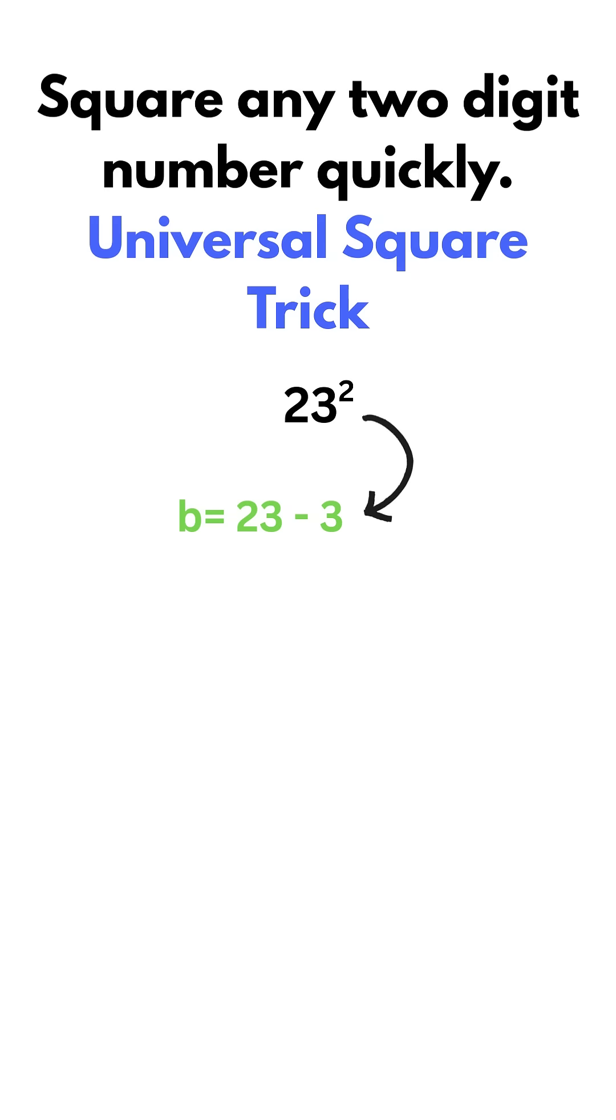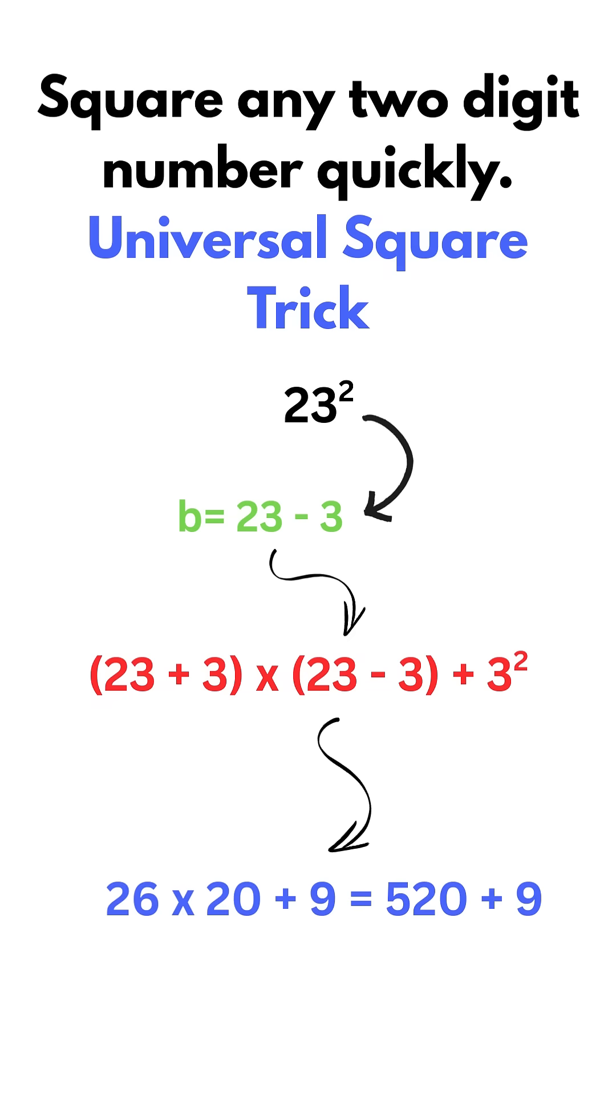Let's use our formula and see how easy it is to calculate. 23 plus 3 times 23 minus 3, plus 3 squared. It's 26 times 20 plus 9. It's 520 plus 9. 23 squared is 529.